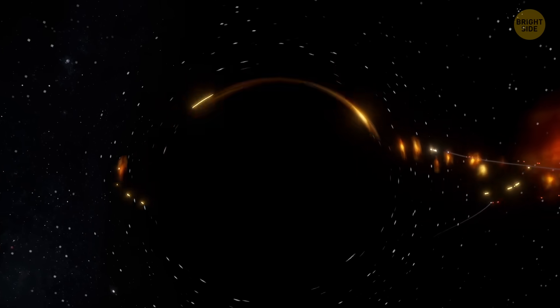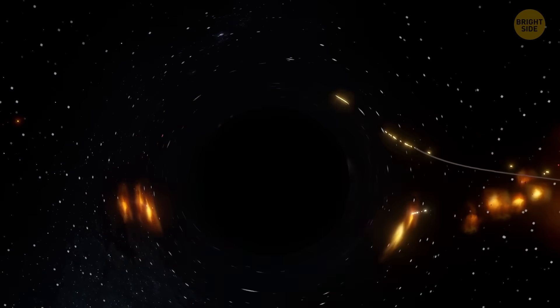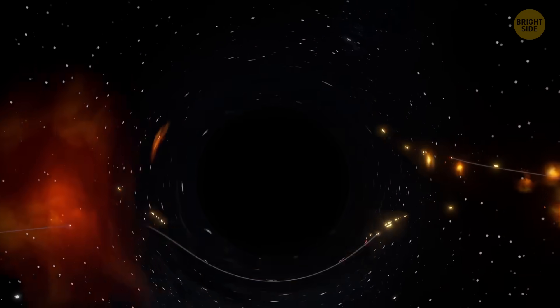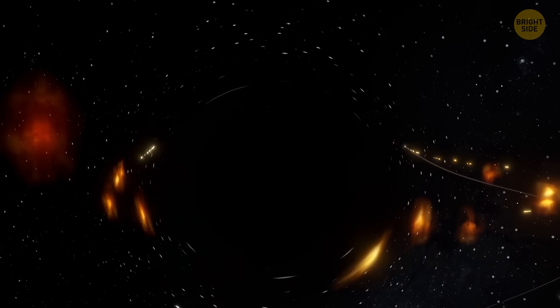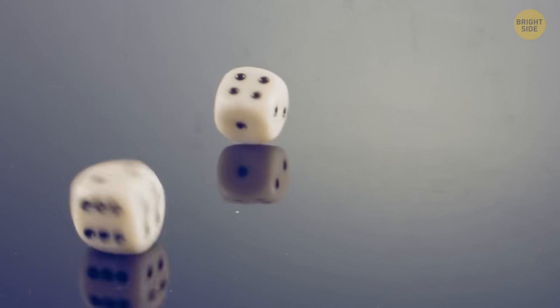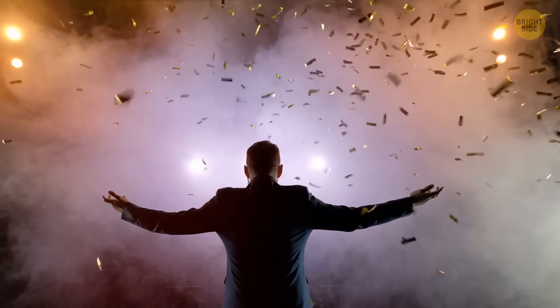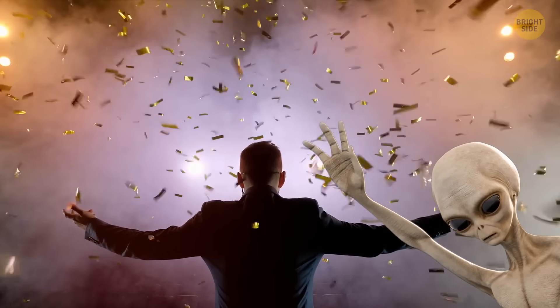Still, scientists have a wild thought: what if some black holes aren't just giant space vacuums that swallow everything around them, but are really hidden wormholes? The odds of that are tiny, like winning the lottery while getting struck by lightning and discovering extraterrestrials at the same time. But mathematically, it's not impossible.